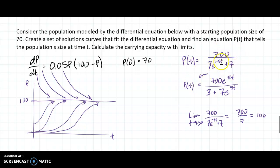700 over 3e^(-5t) + 7 and 700e^(5t) over 3 + 7e^(5t). You can get between these two with just a quick exponential multiplication. So either of those would be good.